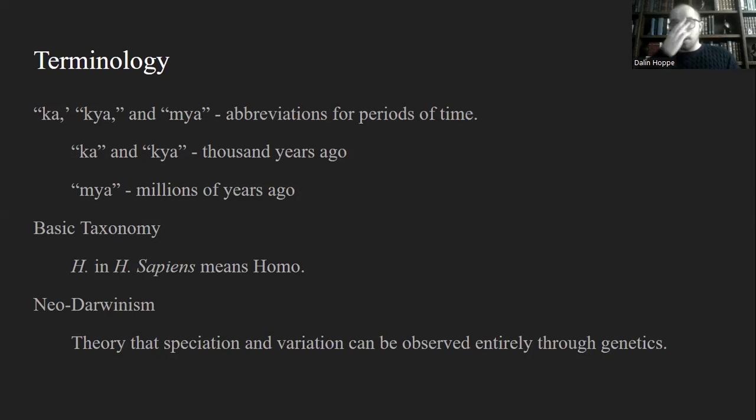Second, terminology. So within the field, they use abbreviations for time because it's an evolutionary science. Geological sciences also do this because there's so much time passing. And so they use K-A to abbreviate for a thousand years ago. So six K-A is 6,000 years ago. Also goes for millions.